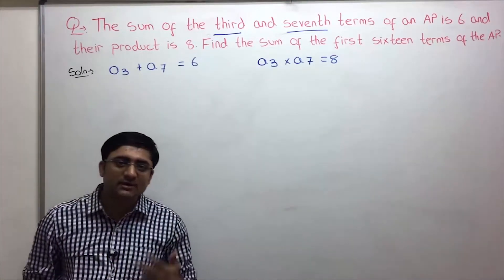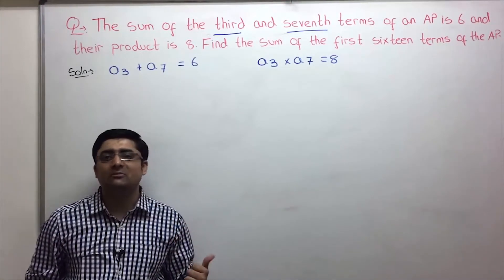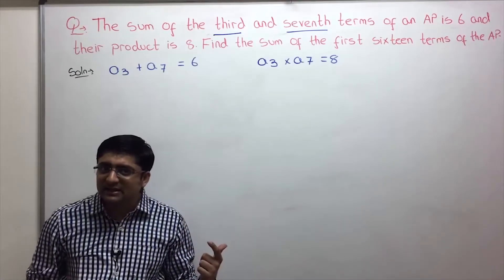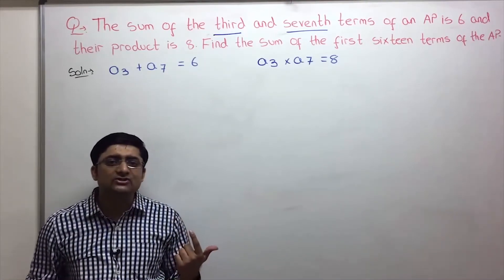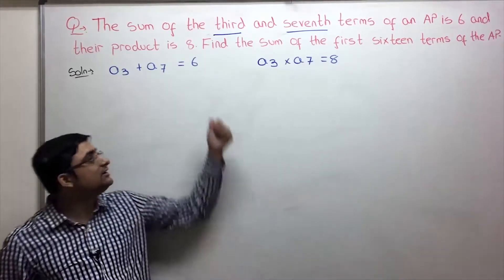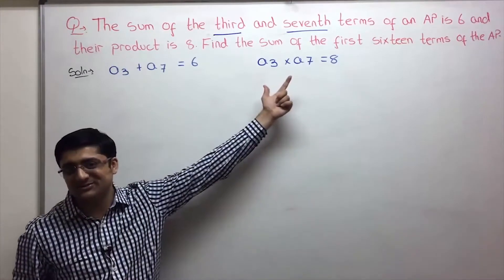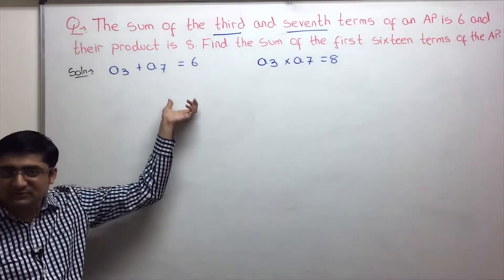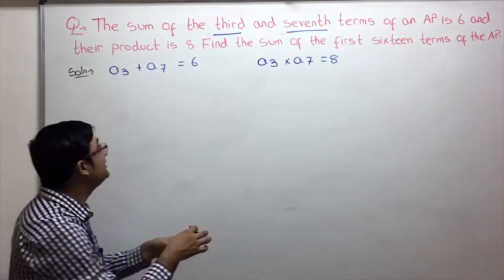An AP is uniquely determined by two things: first term and common difference — so two variables, A and D. For two variables we need two equations. So let's formulate the equations based on these conditions and then solve for A and D.